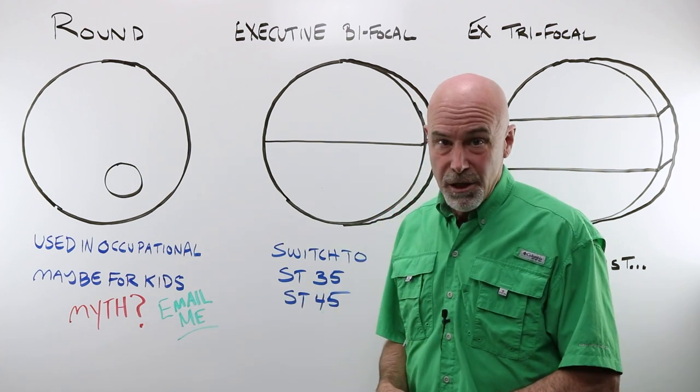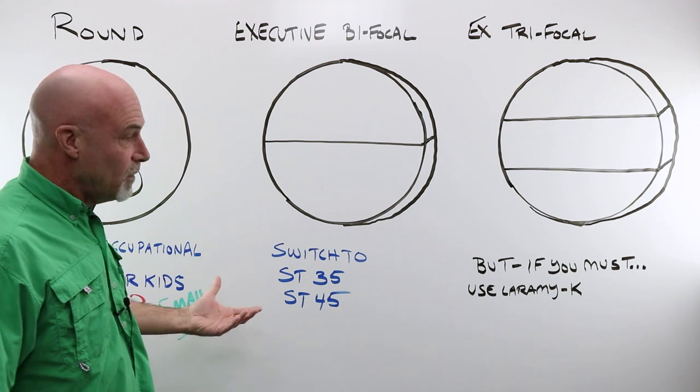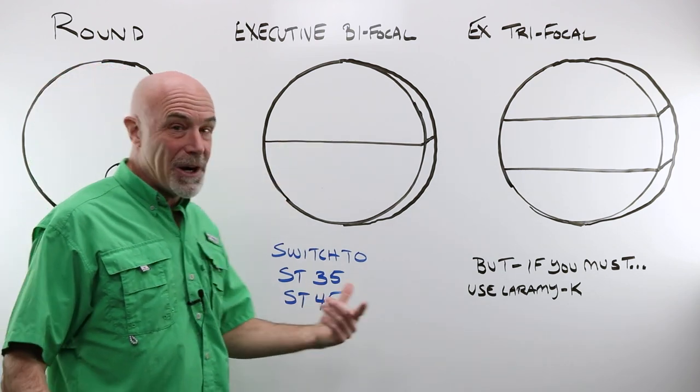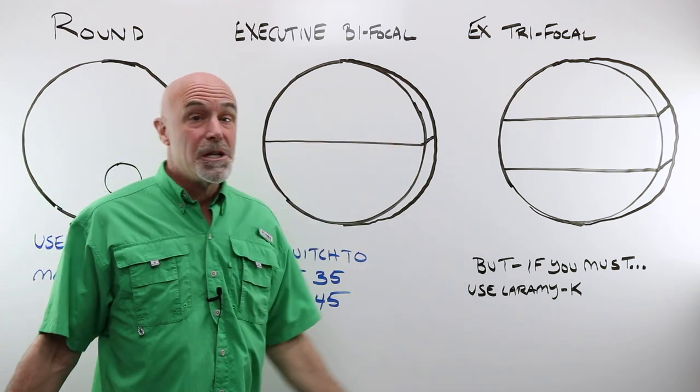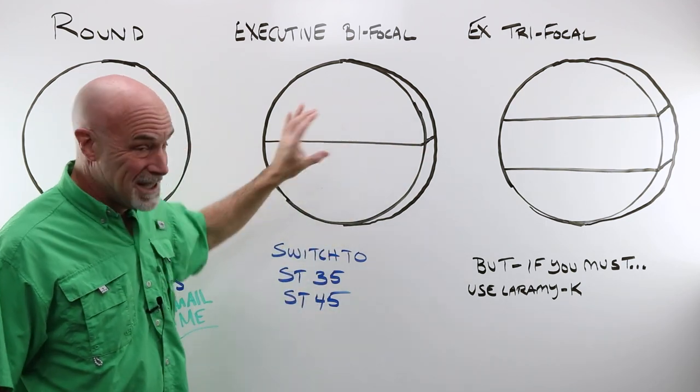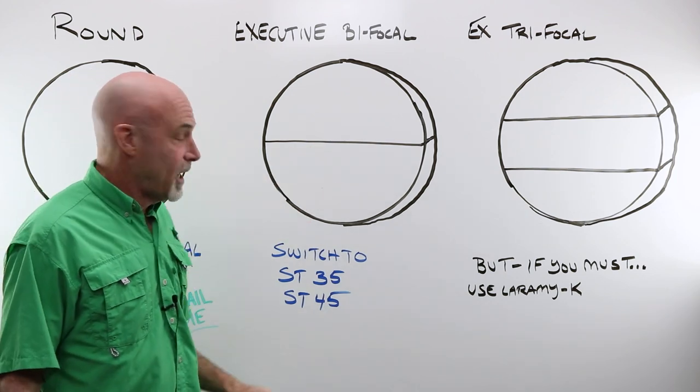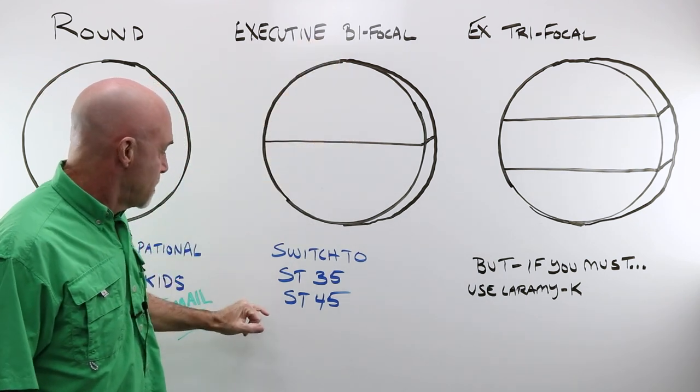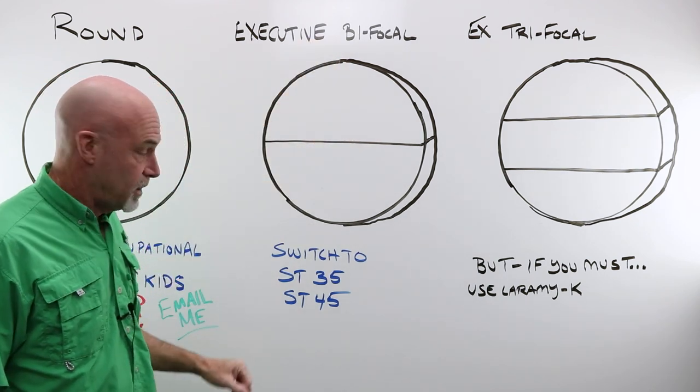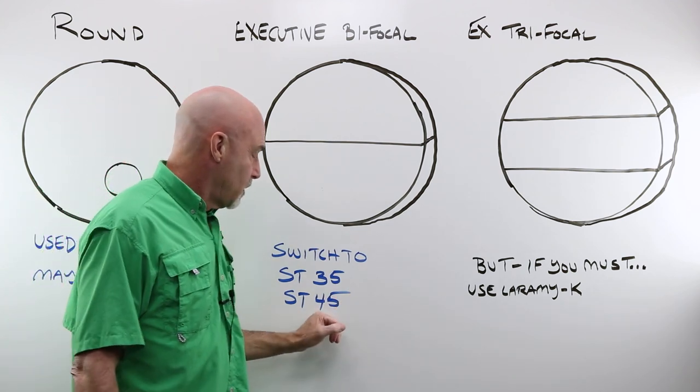You have the executive bifocal, or as it's also known, the Franklin. Two lenses glued together. I started this 30 plus years ago. You actually used to see these once in a while. I never ever had any trouble switching an executive bifocal user to a straight top 35 or a straight top 45. Your best choice, I would strongly urge you to do that.